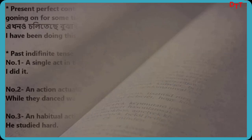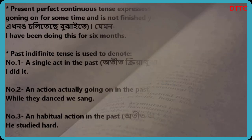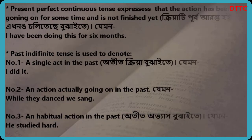Present perfect continuous tense expresses that the action has been going on for some time and is not finished yet. For example: I have been doing this for 6 months.